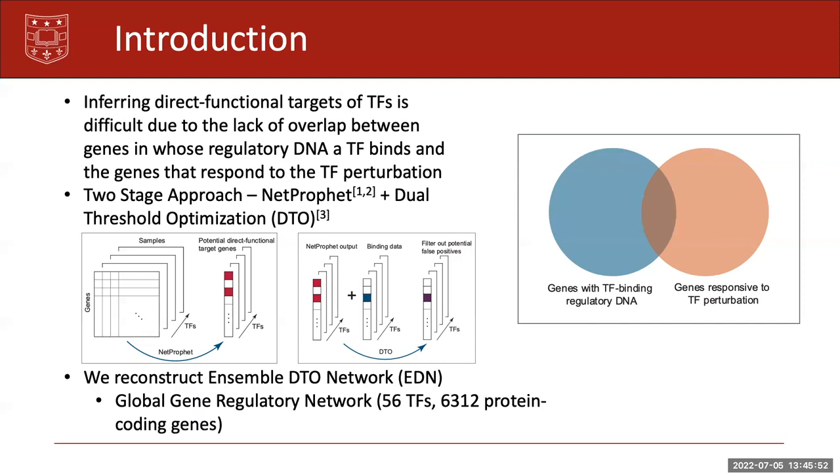So combining these two algorithms, we built the Ensemble DTO Network EDN. It's a global gene regulatory network with 56 TFs and 6,312 protein coding genes.